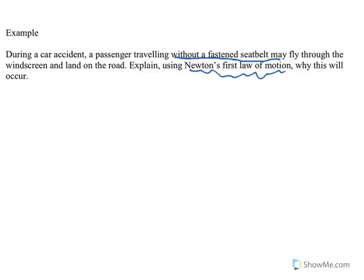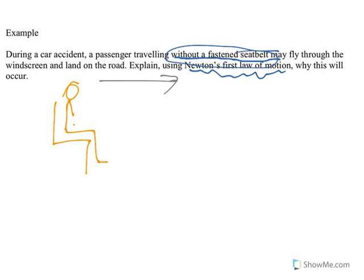During a car accident, the person is sitting in the seat and both the seat and the person are moving together in the same direction. They do not have a seat belt on. In the crash, when the car stops and the seat stops, there must be a force acting on the person to stop them as well. Without a fastened seat belt, there's no force to stop the person — friction between them and the seat isn't enough — so they could fly through the windscreen and land on the road.